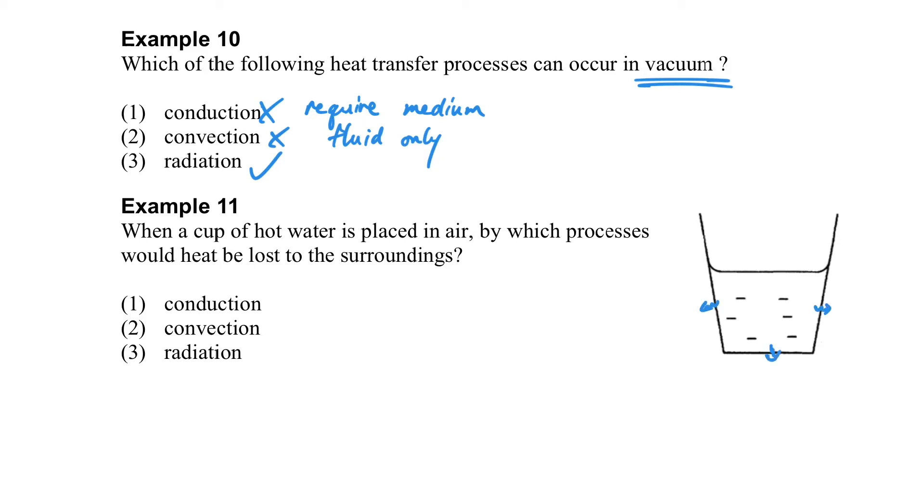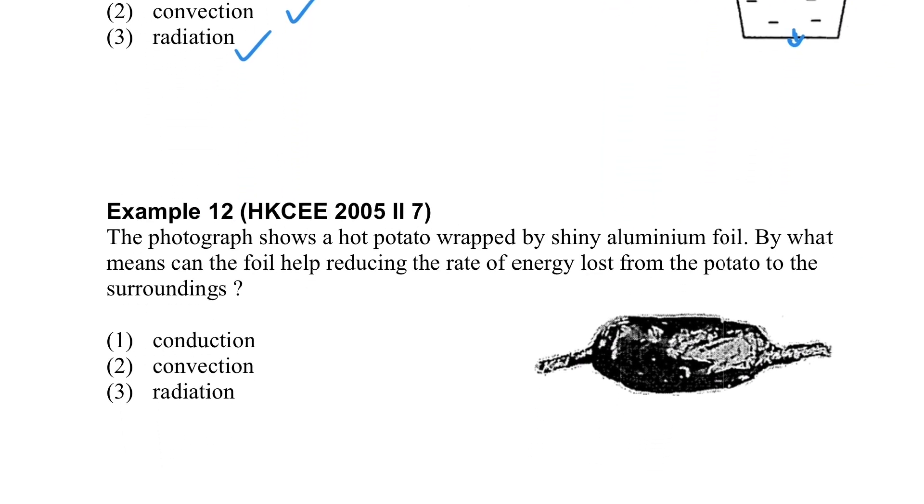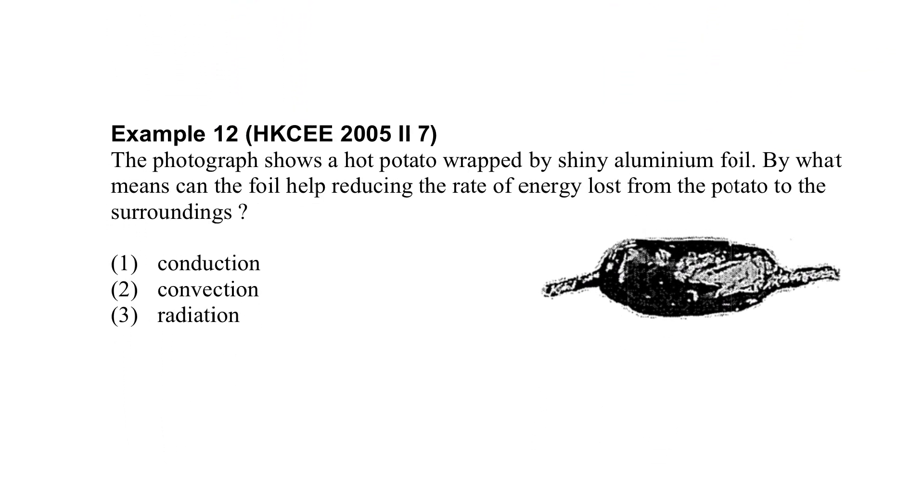And for the next example, the hot water here, how does the heat transfer out? It can transfer through conduction because it will first heat up the cup and then heat up the air. And for convection and radiation, actually, the heat must be transferred away through all these processes.